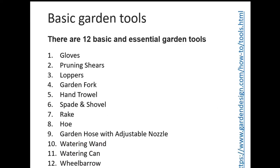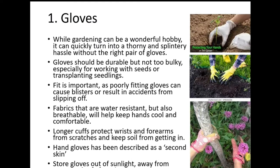There are 12 basic and essential garden tools for beginners. If you want to start, these tools are much required. I have taken this from gardendesign.com — you can also go through that. The 12 tools are: gloves, pruning shears, lopers, garden fork, hand trowel, spades, shovel, rake, hoe, garden hose, watering wand, watering can, and wheelbarrow. Almost all of you have seen these, and some of you have worked with them.